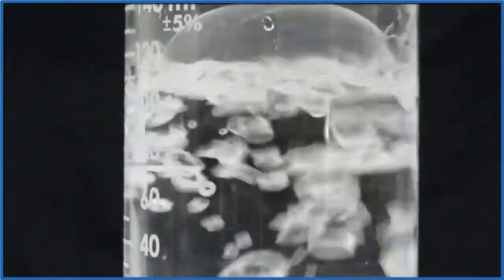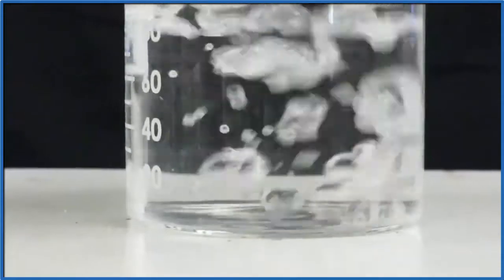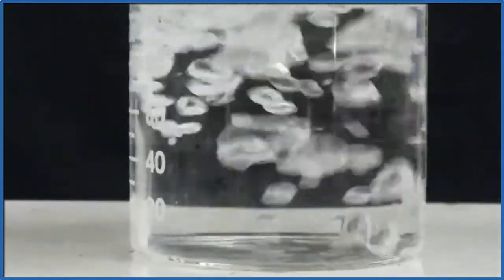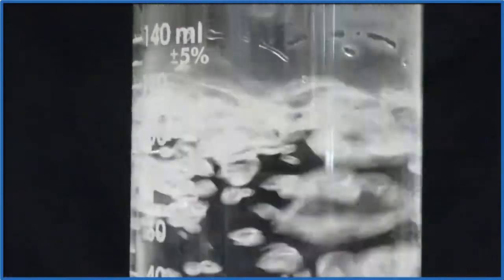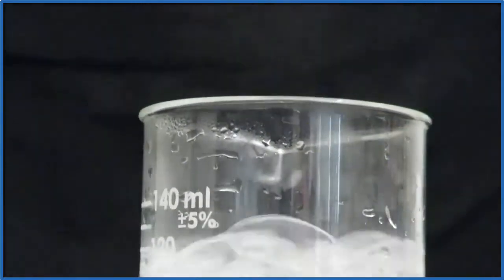So as we add heat to water, the water molecules begin moving faster, and some of them spread out and form a gas. We call that gas water vapor, and that's what's inside the bubbles you see. These bubbles rise to the surface, and this is what we call boiling.